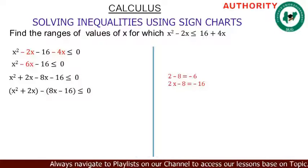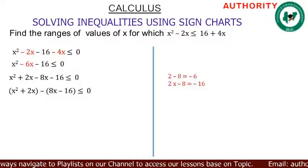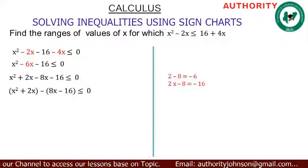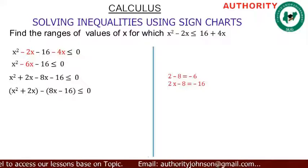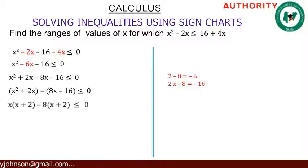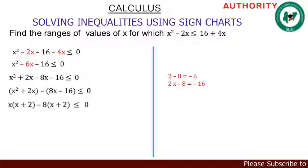We group them: (x squared plus 2x) minus (8x plus 16), less than or equal to zero. In x squared plus 2x, what do they have in common? It should be x. Factoring out x from x squared leaves x, and from 2x leaves 2 — so x times x gives x squared, and x times 2 gives 2x.